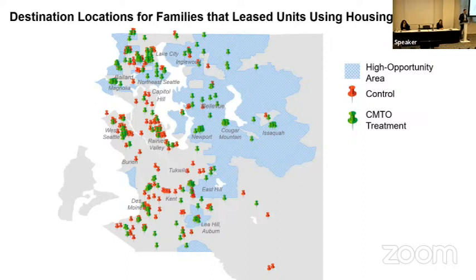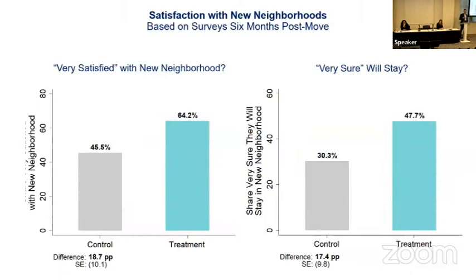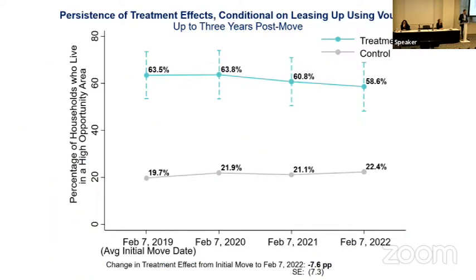You might also imagine the rental broker was just a good salesperson who convinced families to move somewhere they didn't really like. We interviewed them six months later and asked whether they were satisfied with their neighborhood and planned to stay. If anything, you see the opposite — they're more happy with the neighborhoods they live in and more likely to say they're going to stay. In the three years since we did the experiment, they have stayed. They are not moving away in a mass exodus — it looks like they're staying and raising their kids in those new neighborhoods.